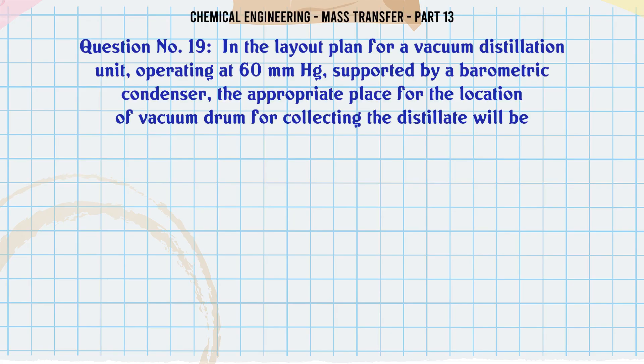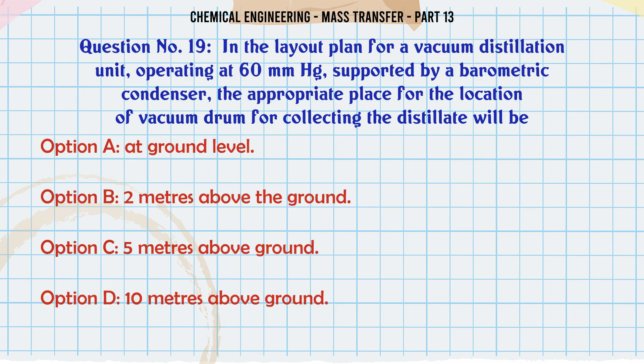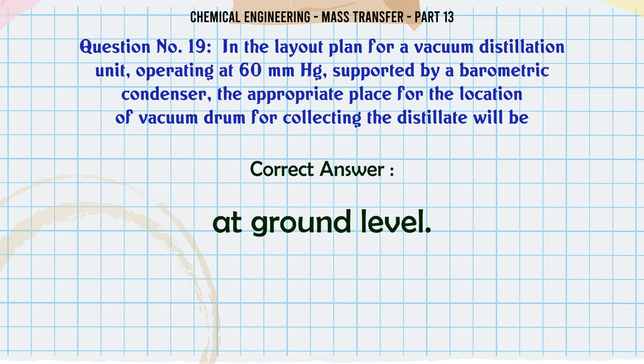In the layout plan for a vacuum distillation unit operating at 60 mm Hg supported by a barometric condenser, the appropriate place for the location of vacuum drum for collecting the distillate will be: A. At ground level. B. 2 meters above ground. C. 5 meters above ground. D. 10 meters above ground. The correct answer is: At ground level.